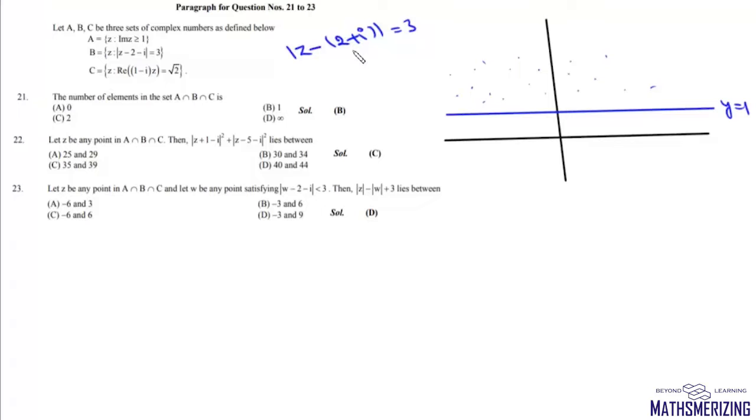Now this equation represents a circle whose center is 2 plus iota and whose radius is 3 units. So it will be this circle with center at 2 plus iota and radius equals 3 units.